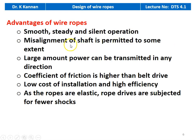The advantages of wire ropes: smooth, steady, and silent operation, unlike flat belt or chain drive. The load carrying capacity is also high. Misalignment of the shaft is permitted to some extent, whereas misalignment leads to lower efficiency in belt or chain drives. Large amounts of power can be transmitted in any direction using the wire rope transmission system. The coefficient of friction is higher than belt drive, with low cost of installation and high efficiency. As the ropes are elastic, rope drives are subject to fewer shocks, so shock-absorbing capacity is also greater.